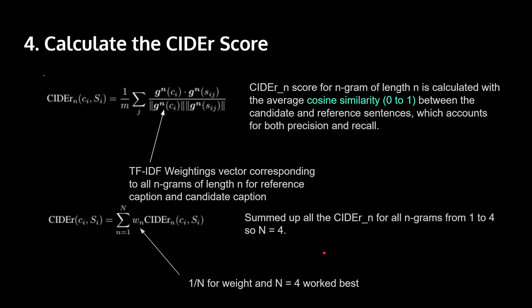And we finally calculate the CIDEr score. And we first calculate the CIDEr n-score depending on the length of the n-gram. And to do that, we calculate the cosine similarity. And note here that the range is from zero to one. You might be confused because the cosine function range is between negative one and one. Well, we apply normalization so that it is between zero to one. Because in order to measure how similar captions are, it makes more sense that they're positive.